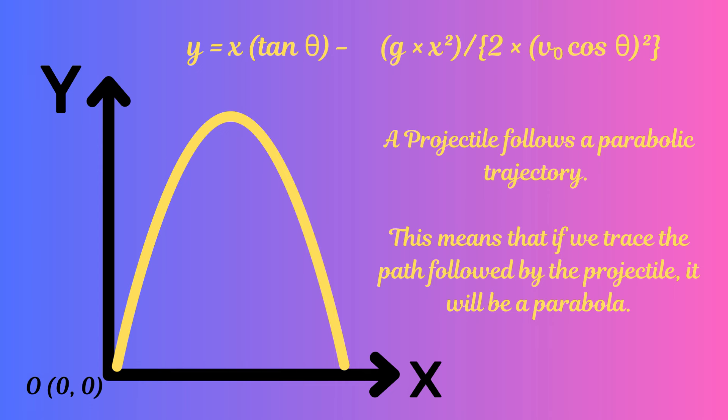What is important to note is that the equation of the trajectory is of the form y equals b times x minus c times x squared. This is the equation of a parabola, so in our simplified model of projectile motion, the trajectory is always a parabola.